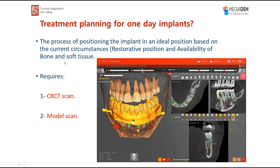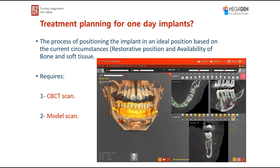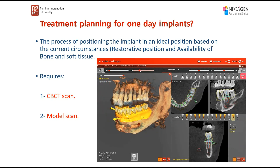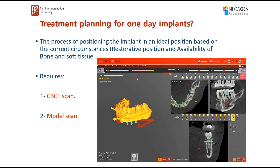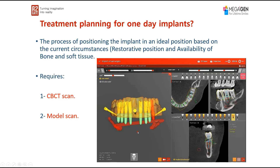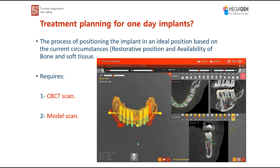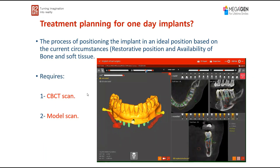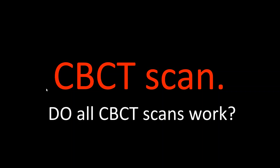Treatment planning for one day implants is the process of positioning the implant in an ideal position based on the current circumstances, restorative position, and availability of bone and soft tissue. Regardless of what implant planning software you use, the two main things you will need are the CBCT and the model scan.